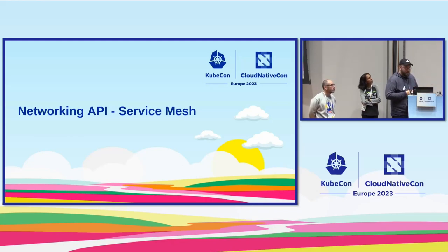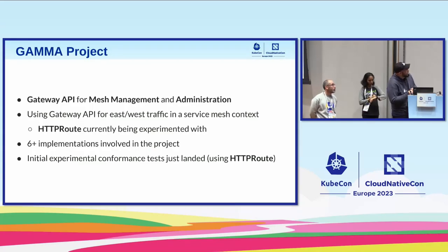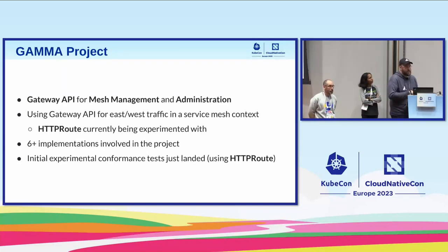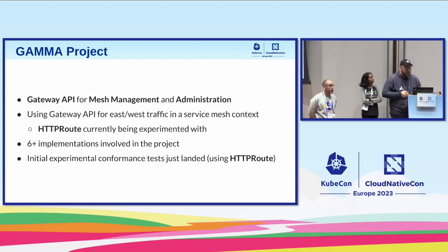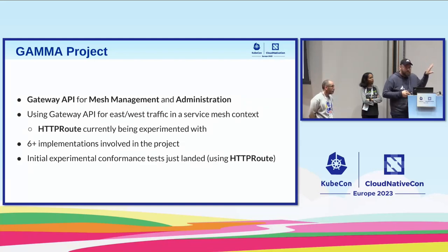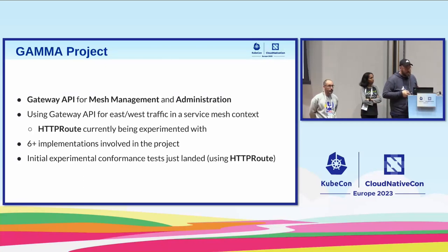We are working on service mesh. This is a newer thing that's happened within the last year with what's called the GAMMA project — Gateway API for Mesh Management and Administration — which is nestled under Gateway API. You can use HTTP routes and GRPC routes for east-west traffic instead of just north-south traffic. There are six-plus implementations, and conformance tests were just merged days ago. If you're interested in service mesh, the GAMMA project is a good place to focus.